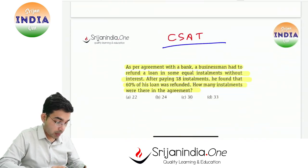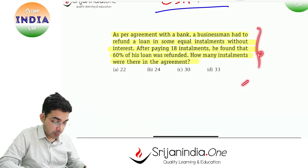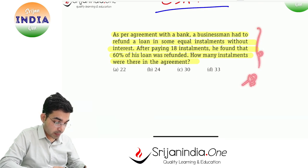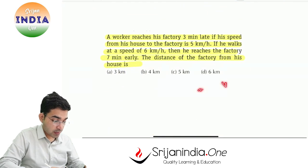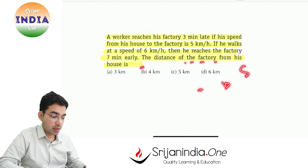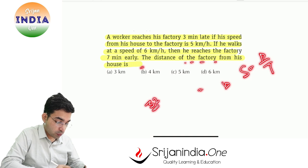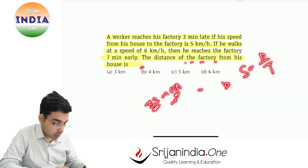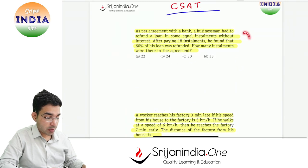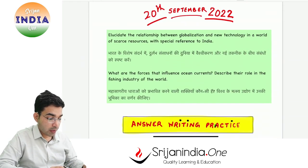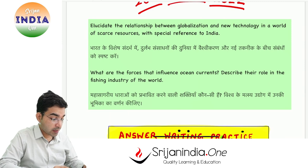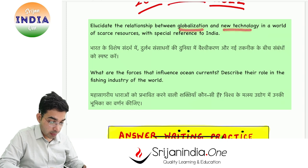Now this is CSAT. CSAT mein bhi everyday basis pe yeh dho sawal aapko solve karne hai. Question number one: installments kitne honge? Second question is work — the distance of the factory from his house. Speed is equal to distance upon time. Is ki ek playlist hai 32 videos ka CSAT ka — wo playlist aap binge watch kar lo, uske baad daily basis pe yeh dho question solve karo, CSAT mein koi difficulty nahi aayegi.